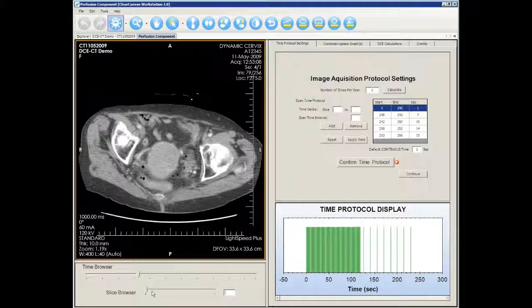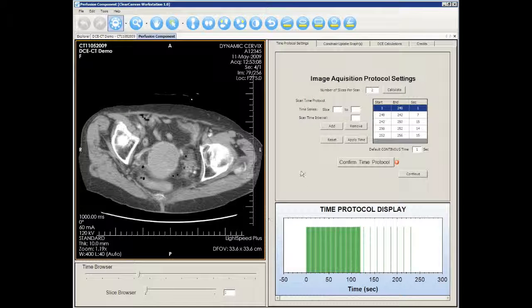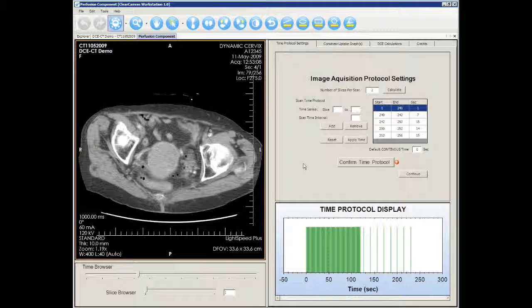The DCE Tool automatically detects the image acquisition protocol. However, you can change the settings yourself. For example, for this dataset, slices 240 to 242 are acquired at an 8 second interval rather than 7.